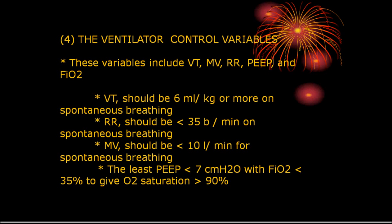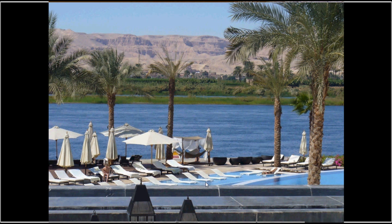If using PEEP (Bb), it should be around 7 cmH2O to say that the patient can be weaned off the ventilator. In addition, FiO2 should be around 35% with oxygen saturation more than 90% — this is good data for weaning the patient.